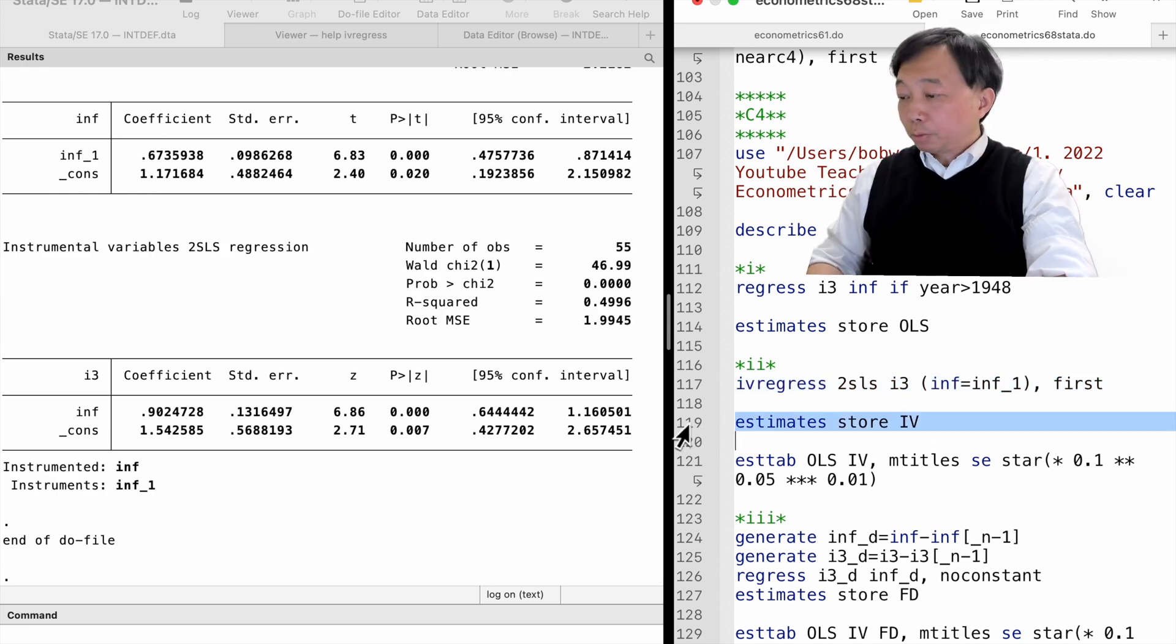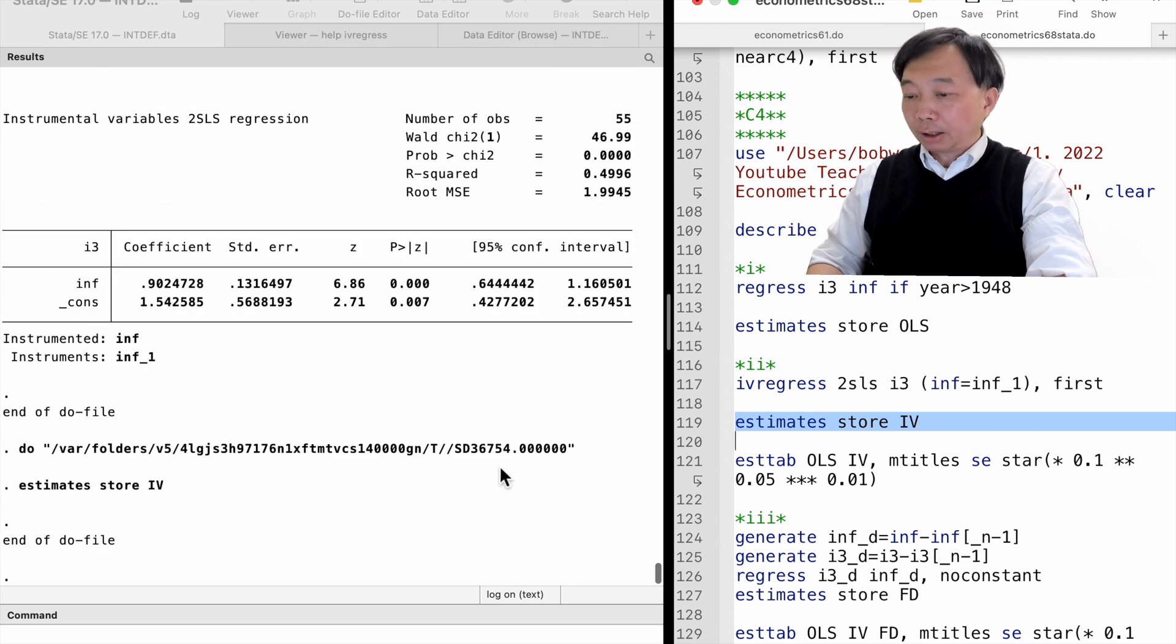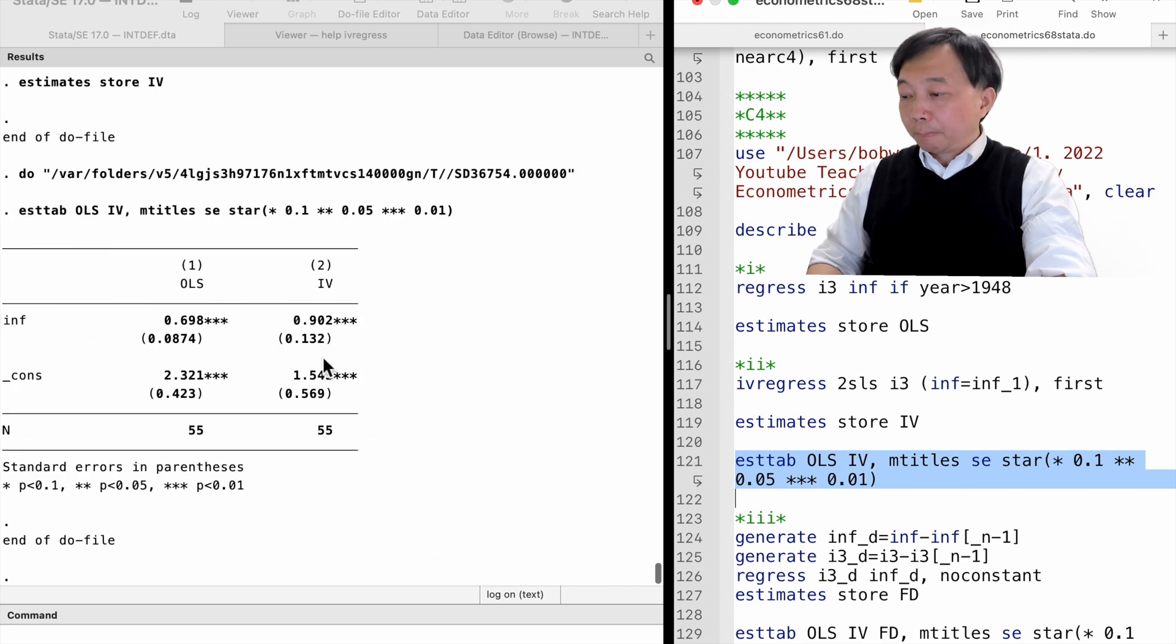The instrumental variables estimate of beta 1 is larger than the OLS estimate. It is consistent with the feeling by some economists of the towards-zero measurement error bias of OLS.